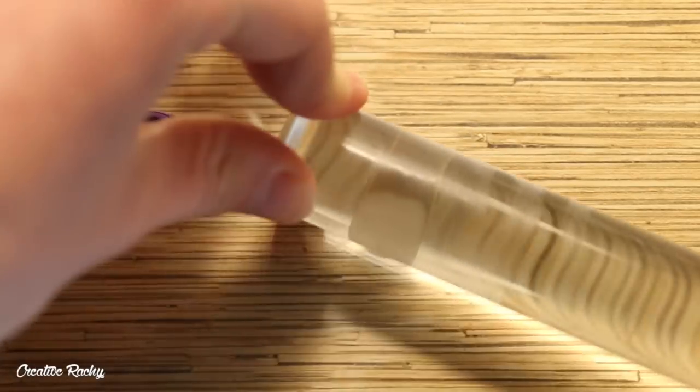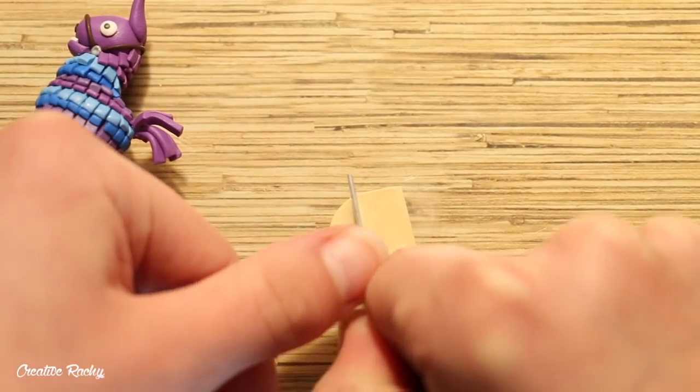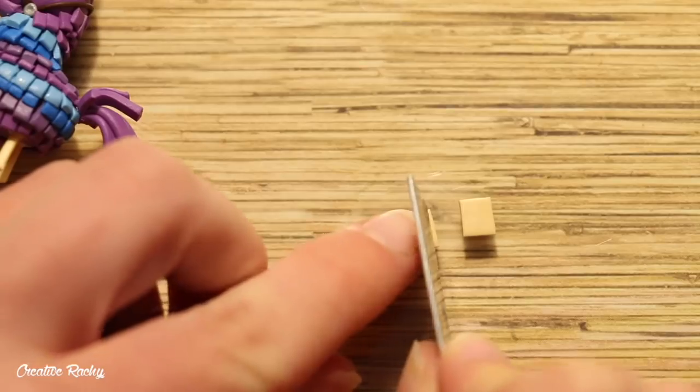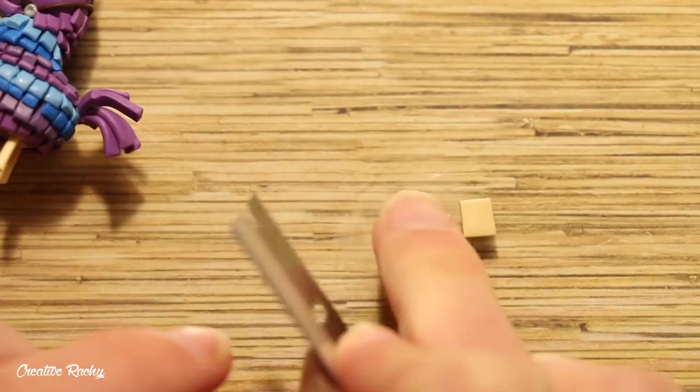For the saddle kind of part, I rolled out some tan colored clay and cut out two squares. I then did the same with some smaller white squares and placed them on top.